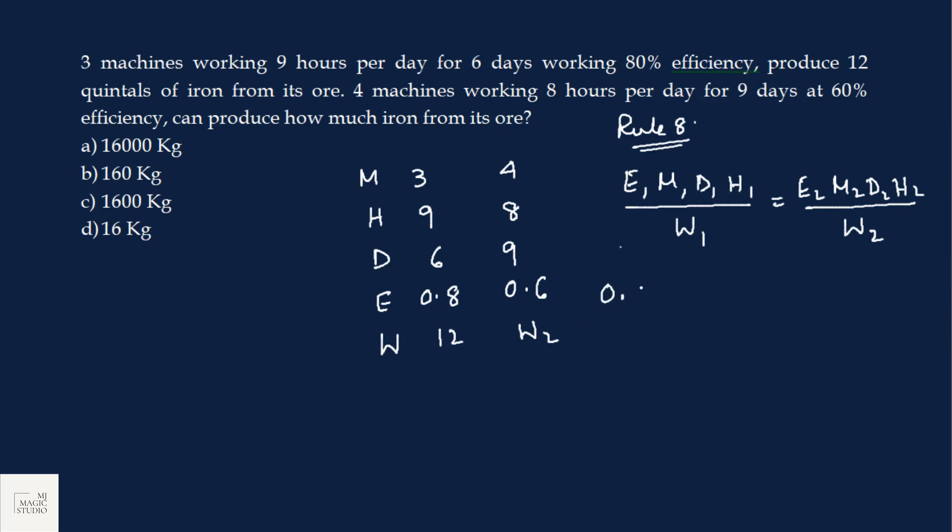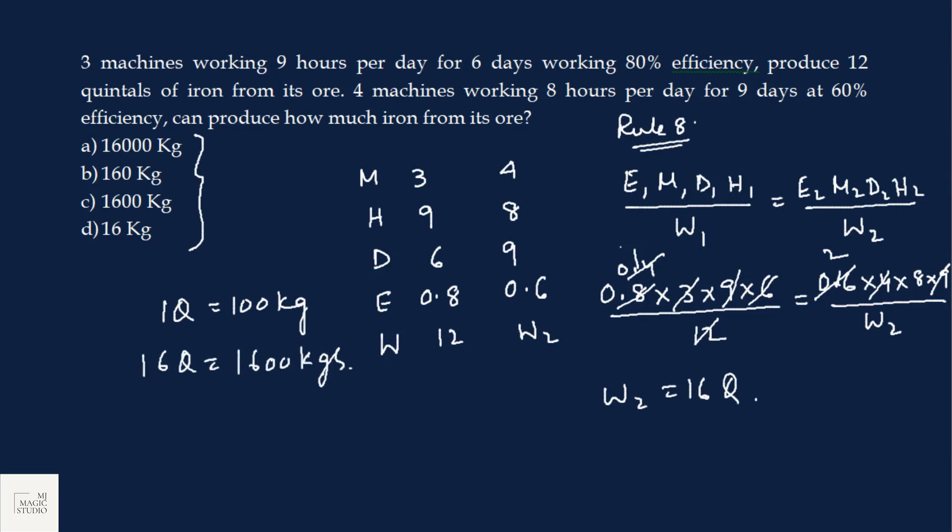So we will have 0.8 into 3 into 9 into 6 by 12 equals 0.6 into 4 into 8 into 9 by W2. So W2 is 16 quintals. But as we can see, all the answers are in kg. We know 1 quintal equals 100 kgs. So 16 quintals is 1600 kgs. Answer is 1600 kgs, that is in option C.